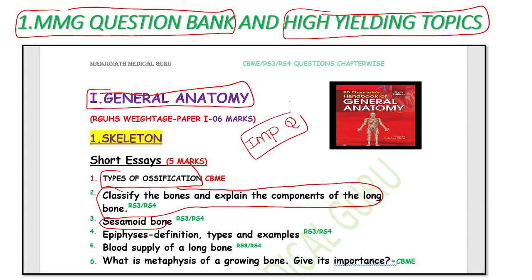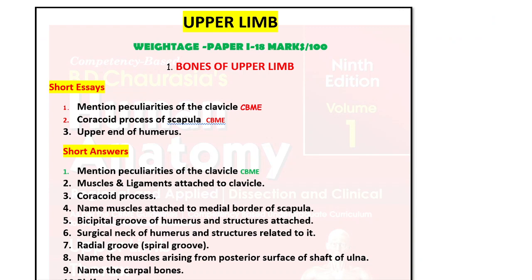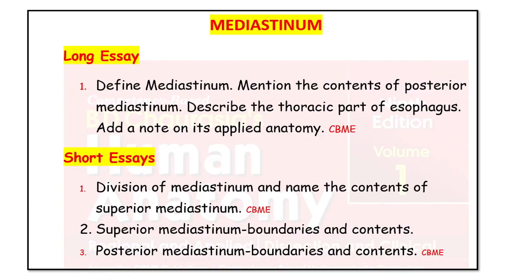You must prepare all these important topics. For example, clavicle is a very common topic, brachial plexus flexors, axillary artery, radial nerve, median nerve. You must know all important topics in each chapter. For mediastinum, a recent question in CBME asked: define mediastinum and mention the contents of posterior mediastinum.